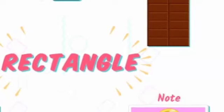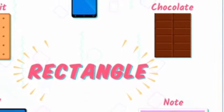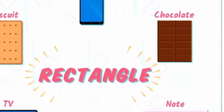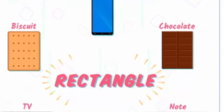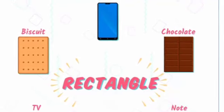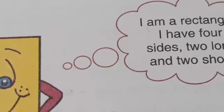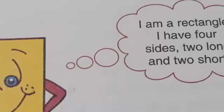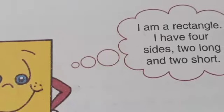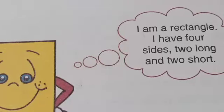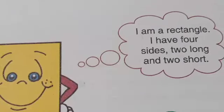The next shape is rectangle. You can see many rectangular objects here. A rectangle has four sides — two long sides and two short sides. The two long sides are equal to each other, and the two short sides are also equal to each other, giving a rectangle four sides in total.